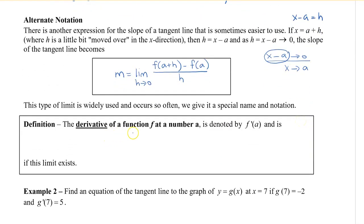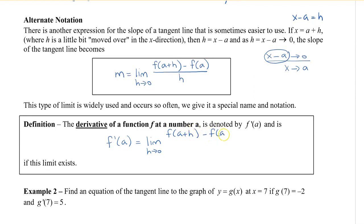This type of limit is used so often that we give it a special name and notation — it is called the derivative. The derivative of a function f at a number a is denoted f prime of a, and it is written as f prime of a equals the limit as h approaches zero of f of a plus h minus f of a, all divided by h.